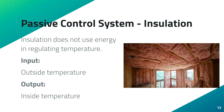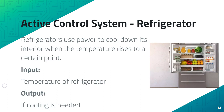An example of a passive control system includes insulation in a house. The input includes the temperature outside of the house and the output is the insulating abilities that allow the house to maintain a constant temperature. An example of an active control system includes a refrigerator, where the temperature of the interior is controlled. The input is the refrigerator's temperature, and if the temperature dips below the set temperature, the system will provide more cooling — the same can be said for an air conditioning system.